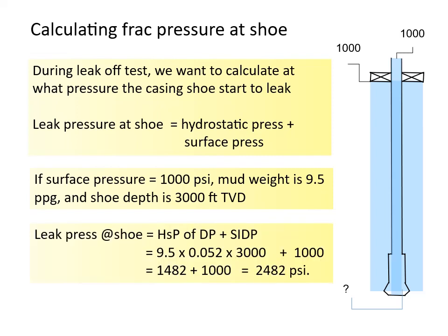Leak pressure at shoe is equal to 9.5 multiplied by 0.052 multiplied by 3000, then plus 1000. Equals 1482 plus 1000, so it is equal to 2482 psi.